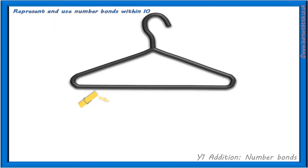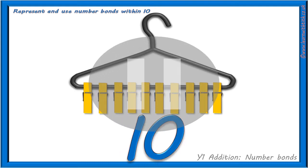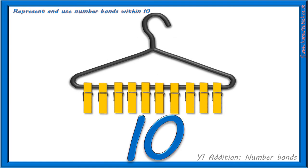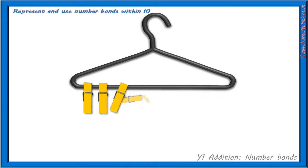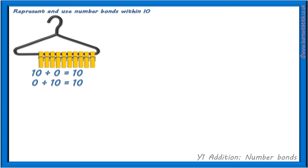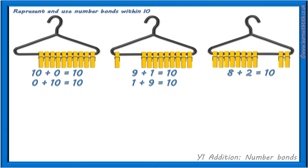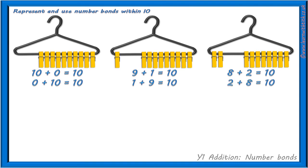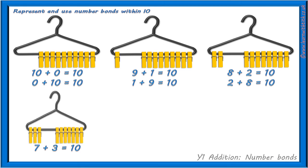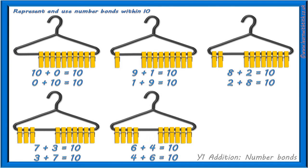And finally, how many sums can you make with 10 pegs? Working with 10 pegs gave us: 10 add 0 equals 10, 0 add 10 equals 10, 9 add 1 equals 10, 1 add 9 equals 10, 8 add 2 equals 10, 2 add 8 equals 10, 7 add 3 equals 10, 3 add 7 equals 10, 6 add 4 equals 10, 4 add 6 equals 10, and 5 add 5 equals 10.